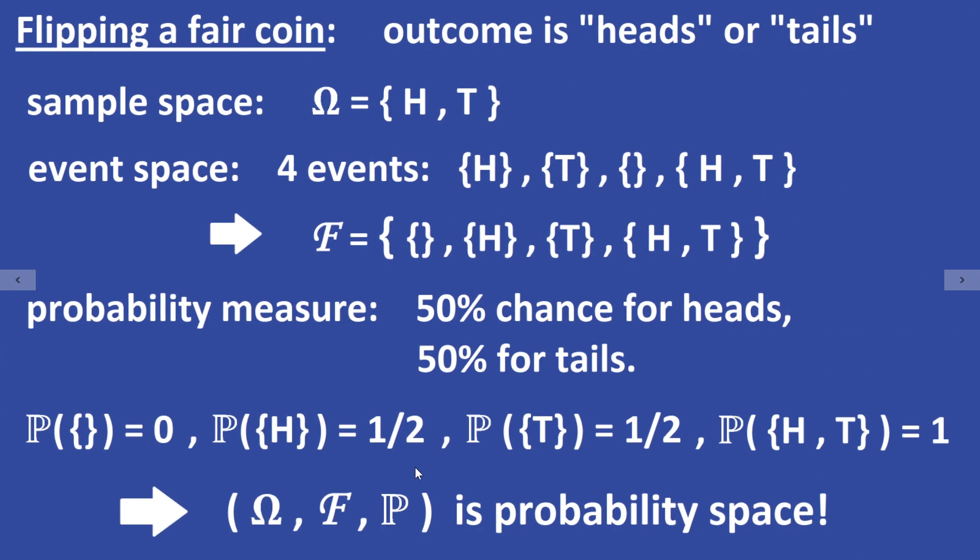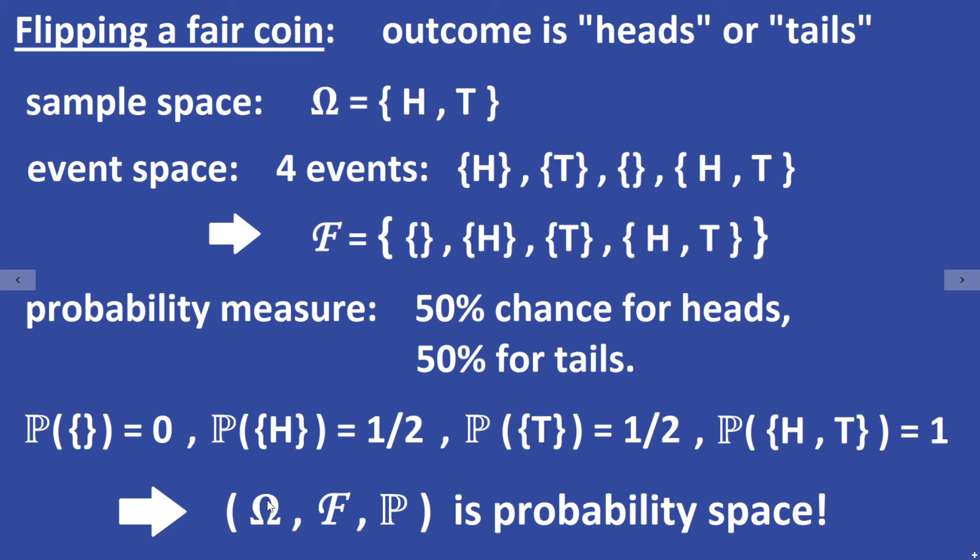Now the sample space Omega together with the event space F and the probability measure P is a probability space.